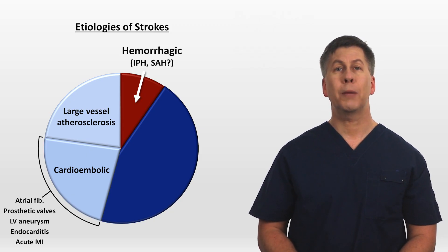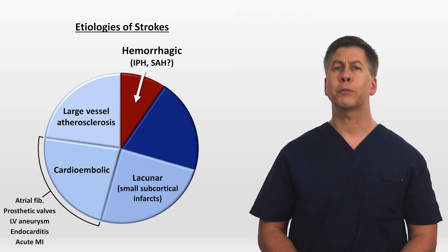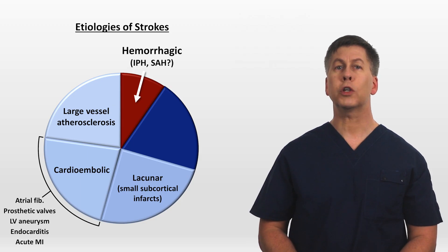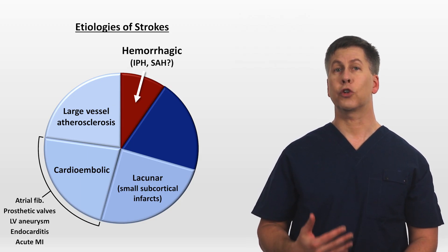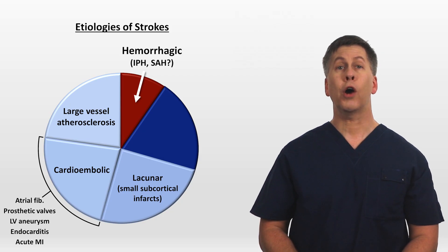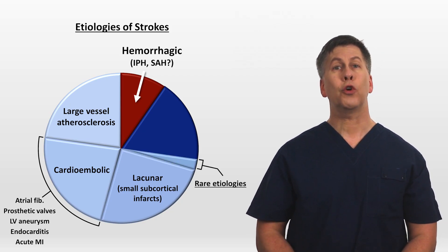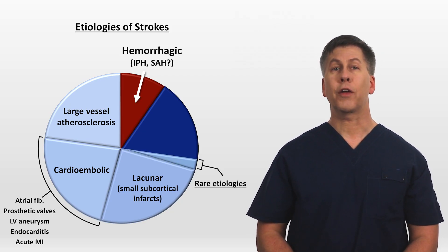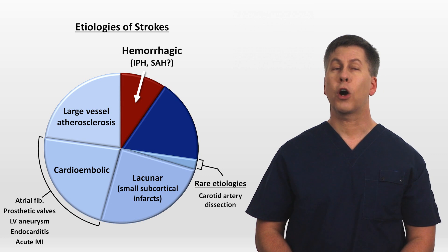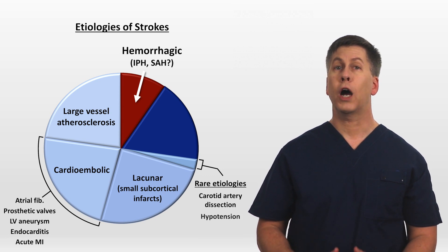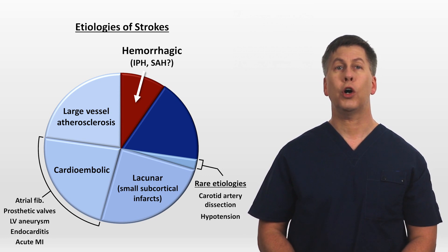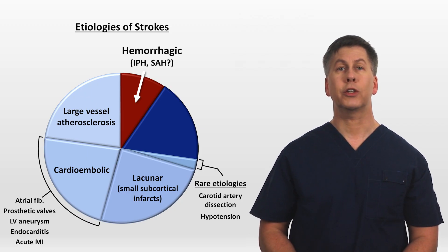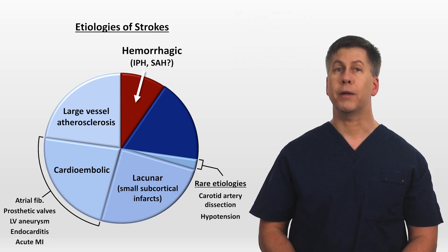Ischemic strokes can be lacunar strokes, which are small subcortical infarcts usually affecting the basal ganglia, pons, and internal capsule. There are a number of rare etiologies that don't really belong in another category, such as carotid artery dissection or severe hypotension, in which strokes can form in the so-called watershed areas between vascular territories, where blood delivery is already relatively low at baseline.